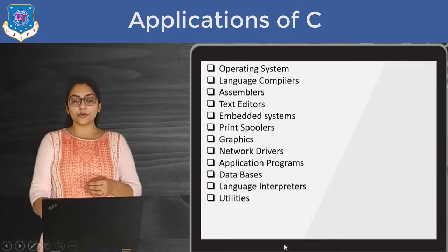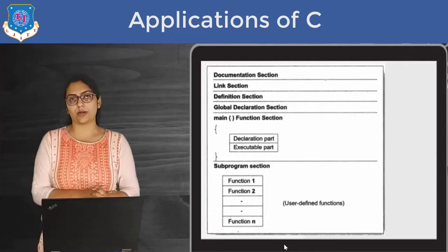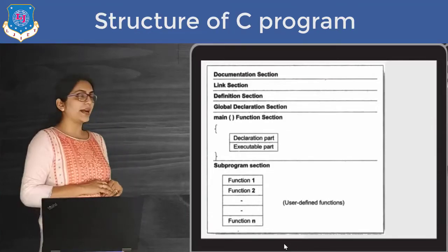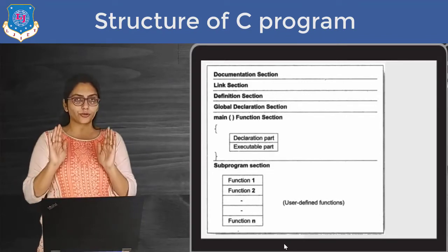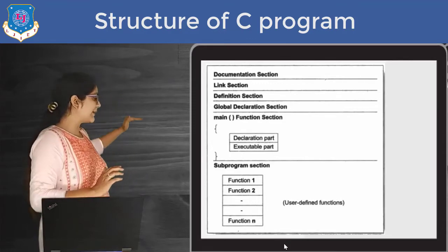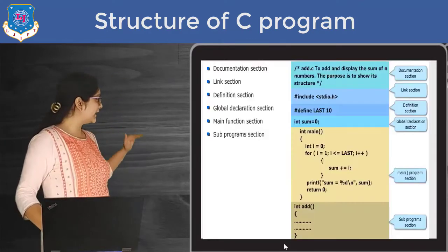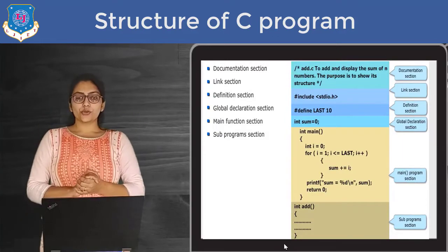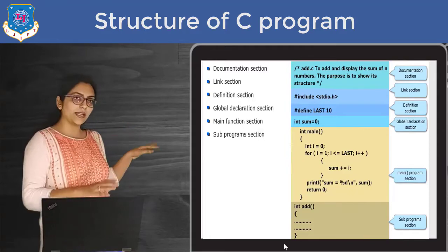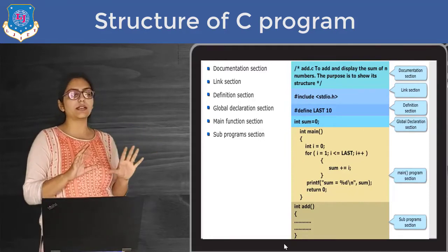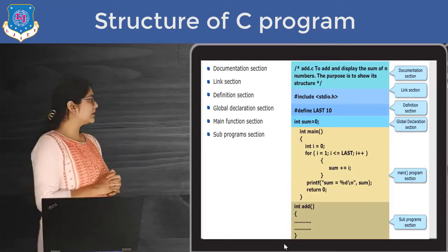Then after, I am going to cover the structure of a C program. If someone is asking you to draw the structure of a C program, you have to draw something like this. Now let me explain how exactly these terms are. Here you can see a for loop. Don't worry if you don't know for loops because we don't need it right now. I am just observing the terms.